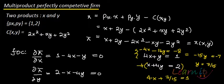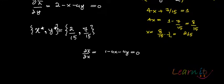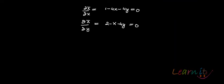To check the second order conditions, we form the Hessian matrix. The first order conditions are ∂π/∂X = 1 minus 4X minus Y = 0 and ∂π/∂Y = 2 minus X minus 4Y = 0. Since we have two variables, we need a 2x2 Hessian matrix with elements f11, f12, f21, and f22.